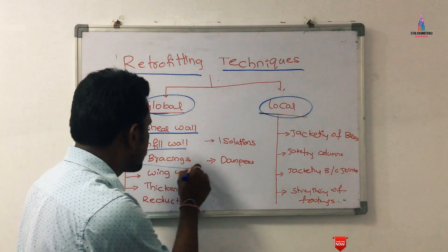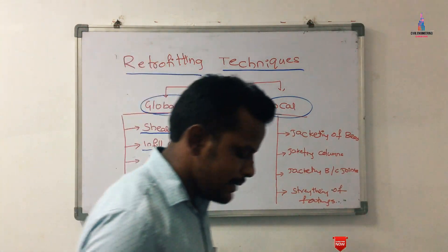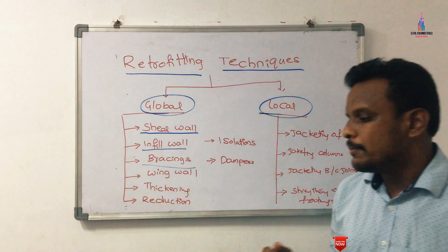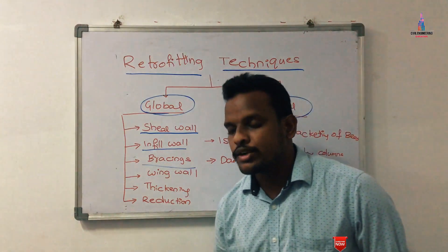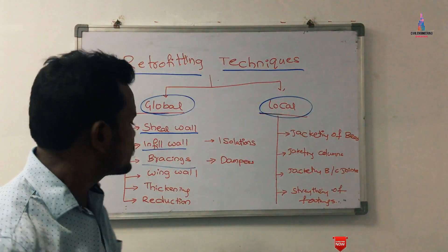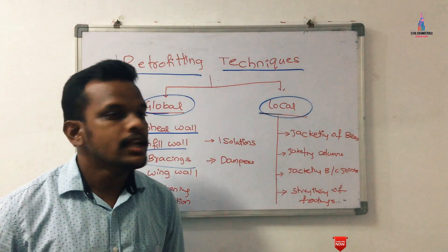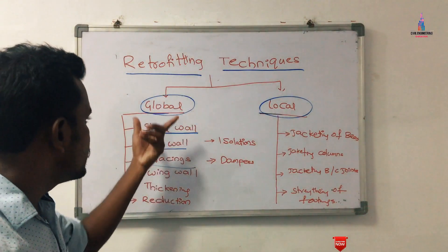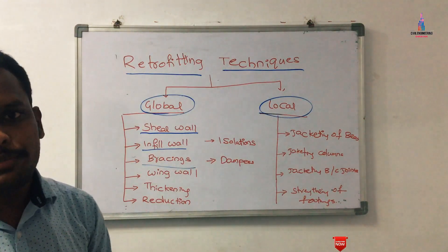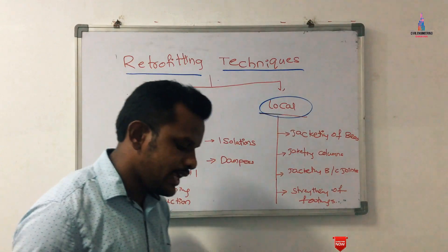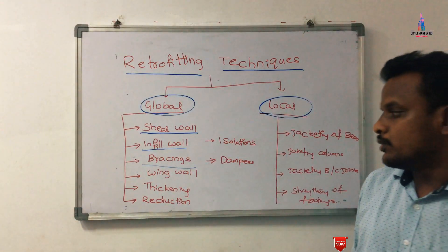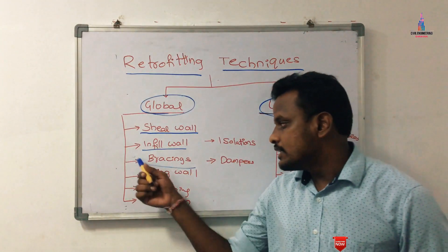The third global technique is the bracing system, which is one of the most important retrofication processes. Nowadays most commercial structures carry out retrofication using bracing structures. The bracing system is designed using IS 800 steel designing code.